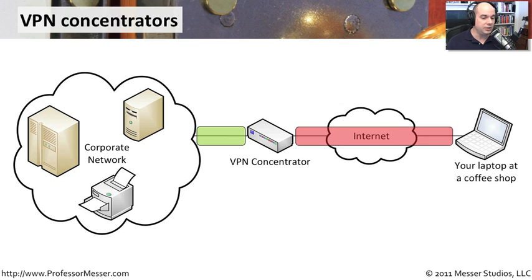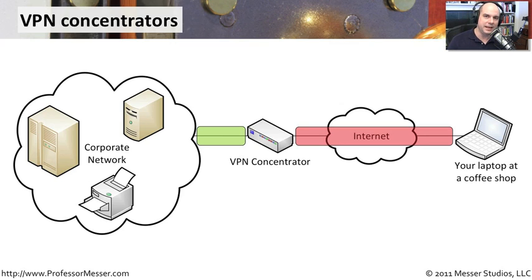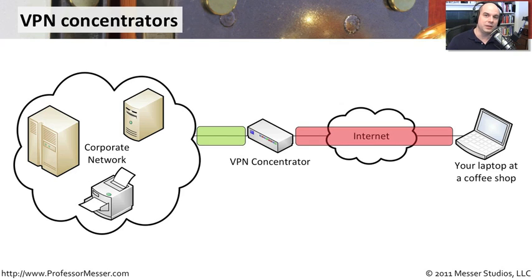The VPN concentrator is doing a lot of hard work — it is decrypting this traffic, putting it onto the internal network, and you're able to communicate as if you were sitting in the same building as all of these devices. As the response goes back to your machine, the VPN concentrator is in charge of encrypting that data and sending it across that link again.